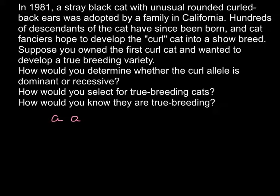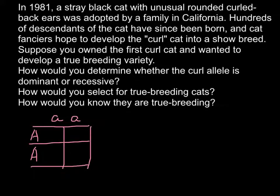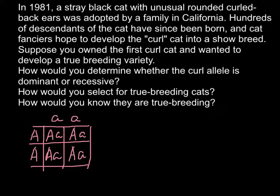When we cross such a cat with another cat that would be normal — and in this case normal would be dominant, so capital A, capital A — in such a situation we expect that all the progeny would be heterozygous: capital A, small a for all offspring. As you see, all the progeny wouldn't show this trait because they got one normal dominant allele from the normal parent.